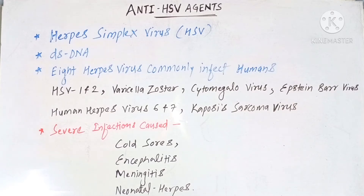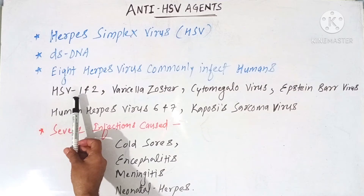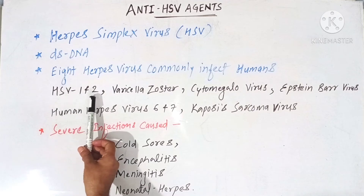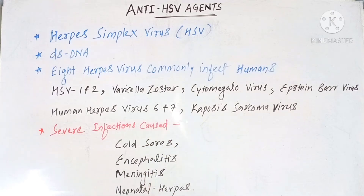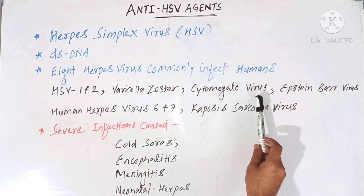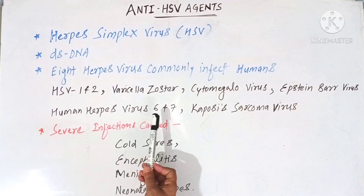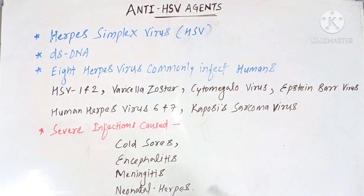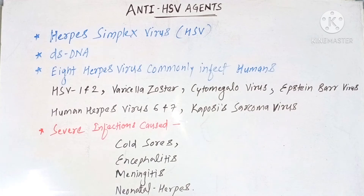There are 8 herpes viruses which commonly infect humans. Number 1 is HSV-1 (herpes simplex virus 1), and number 2 is herpes simplex virus 2. Third is varicella-zoster virus. Fourth is cytomegalovirus. Fifth is Epstein-Barr virus. Sixth and seventh are human herpes virus 6 and human herpes virus 7. And the eighth is Kaposi's sarcoma virus.